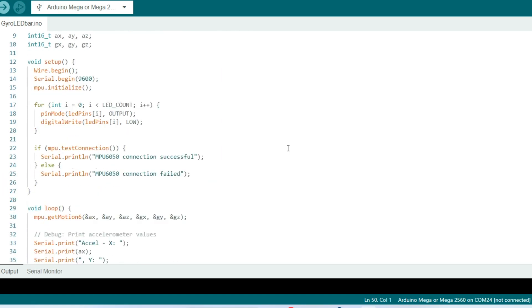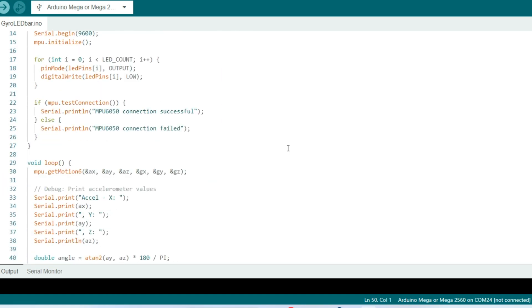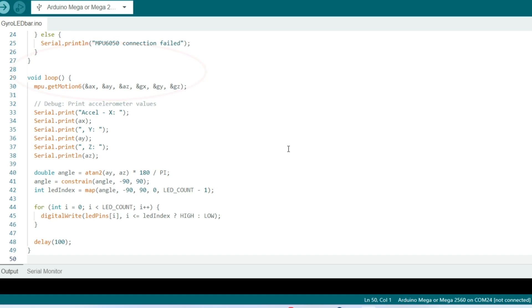The loop function reads accelerometer and gyroscope data from our MPU6050 sensor and prints the accelerometer values to the serial monitor for debugging. It calculates the tilt angle based on the accelerometer's y and z values and maps the tilt angle to the corresponding LED index and turns on LEDs up to and including the calculated LED index and turns off the rest.